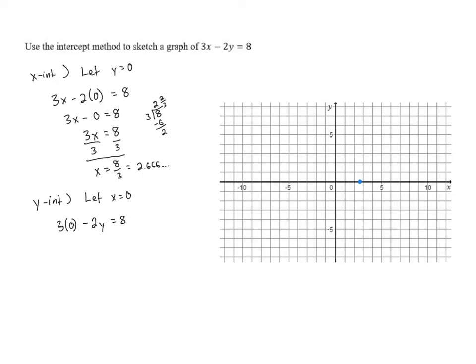Anything times 0 is 0, so we have 0 minus 2y equals 8. 0 minus 2y is the same as negative 2y. That 0 just vanishes. So we have negative 2y equals 8, and to get y alone,